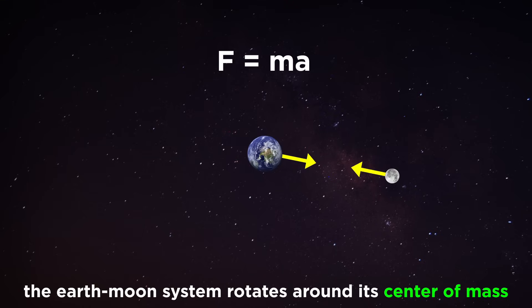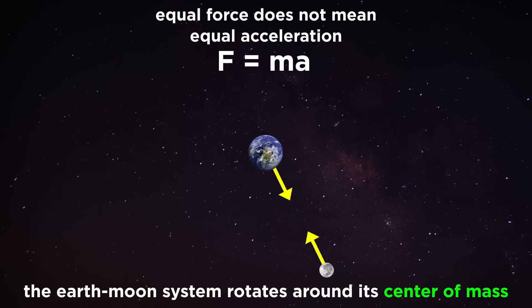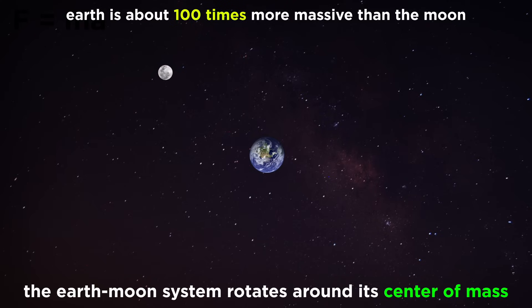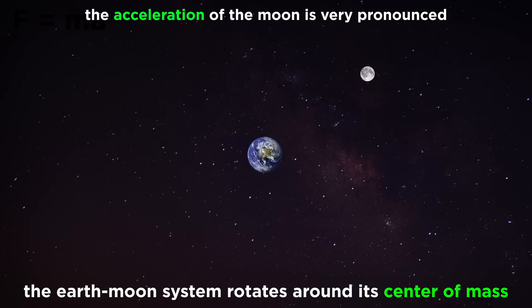But don't forget that F equals ma, so equal forces will not produce equal accelerations if the masses are different. As it happens, the earth is much much more massive than the moon, so the mutual gravitational force is able to accelerate the moon more than the earth, and the center of mass for the system lies within the earth itself, which is why we simply observe the moon going around the earth.